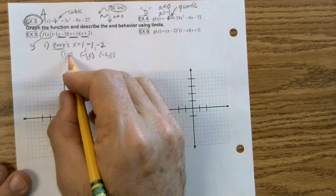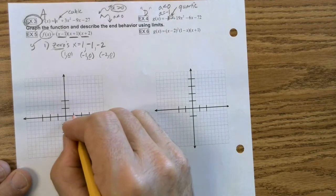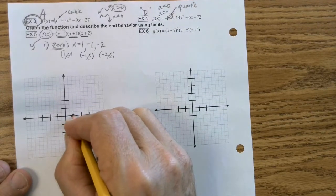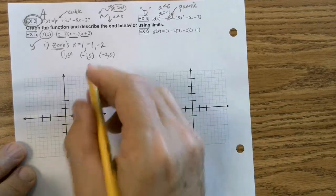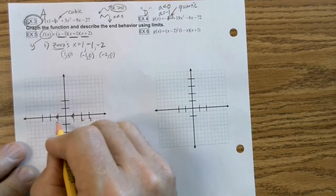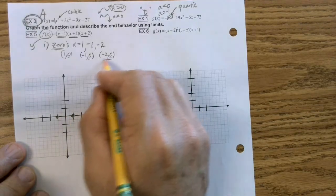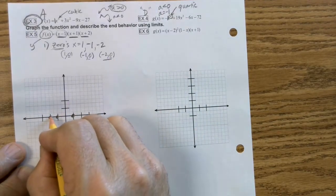So we're going to plot these points. 1, 0. I think they want us, because these are 1s, just to spread it out a little bit. So this is 1, this is 2, this is 3. So negative 1, 0 would be right here. And then negative 2, 0 would be right here.